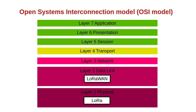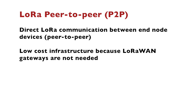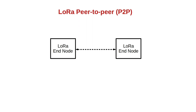If we look at the OSI network model, LoRa is part of the first physical layer, and LoRaWAN is part of the second data link layer. LoRa peer-to-peer is a direct LoRa communication between end-node devices, which means that infrastructure cost is reduced because LoRaWAN gateways are not needed. There are many use cases where LoRa peer-to-peer can be applied — it can even be used as a chain topology technology that extends the range of an existing LoRaWAN network.